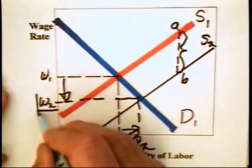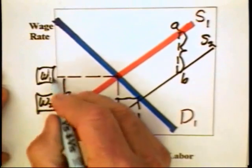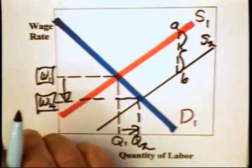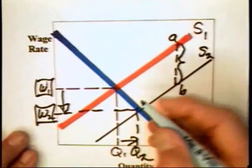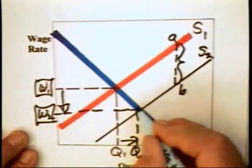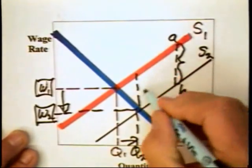It could very well be that those who are earning the lower wages are better off than the workers who are earning the higher wages. And this is the case because these workers earn wage of W2 and they get these benefits.